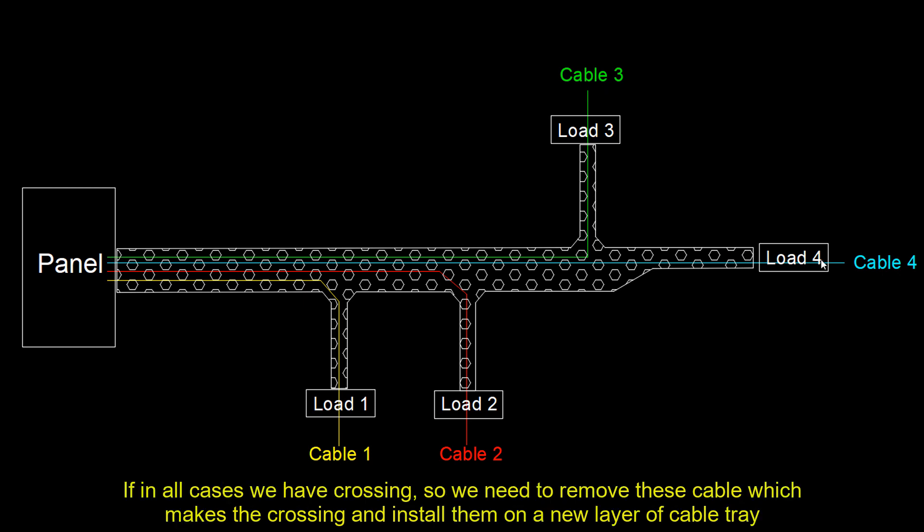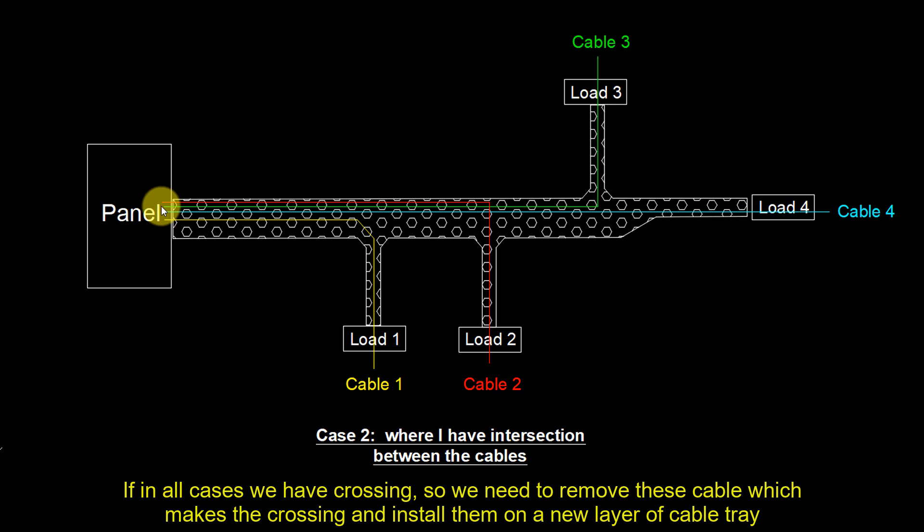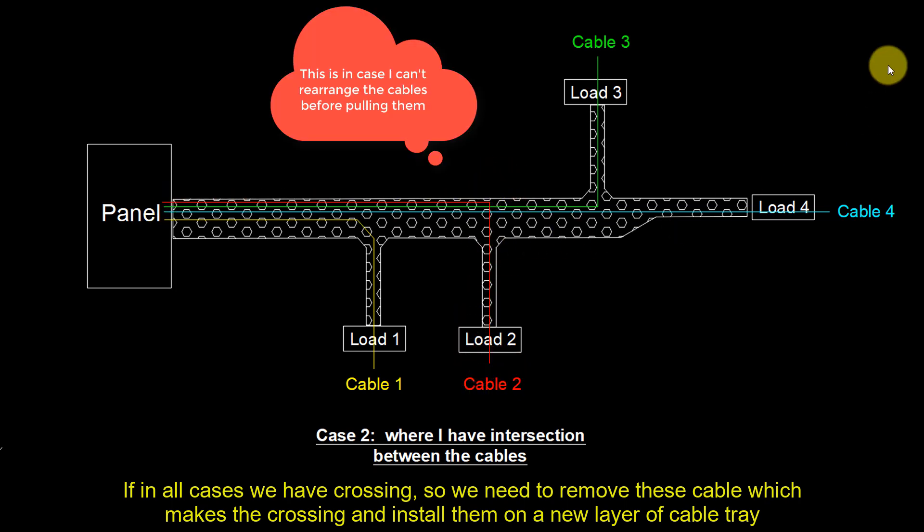If in all cases we have crossing, we need to remove these cables which makes the crossing and install them on a new layer of cable tray.